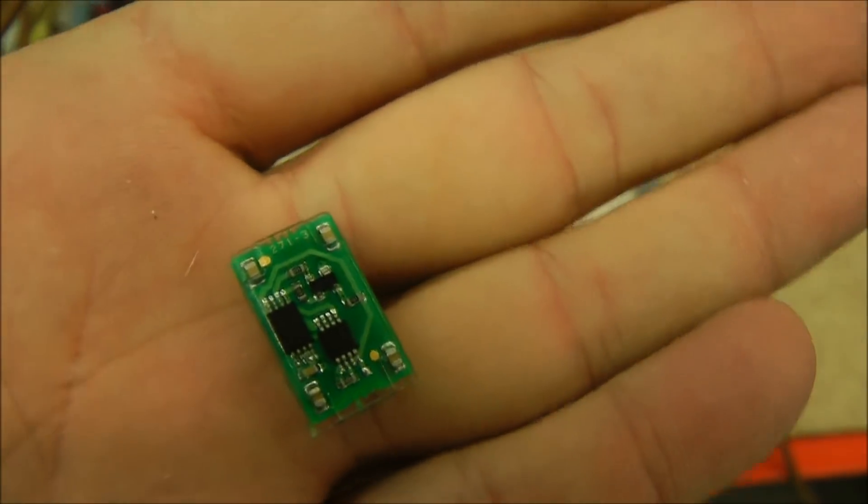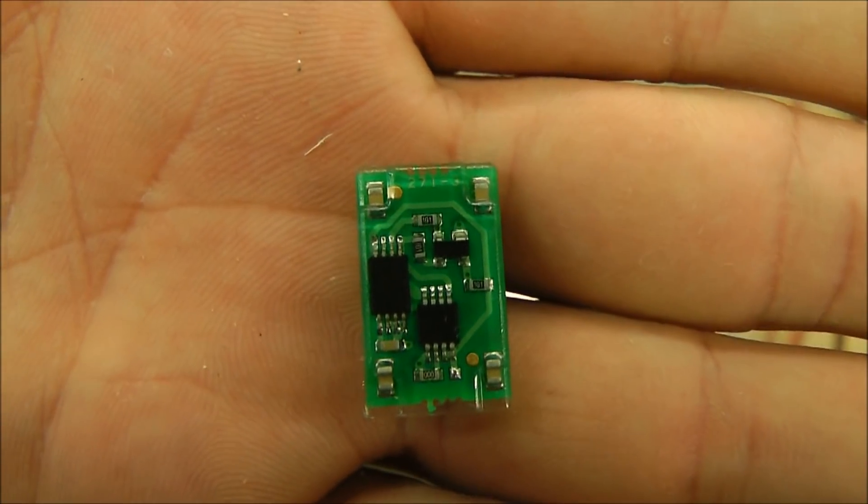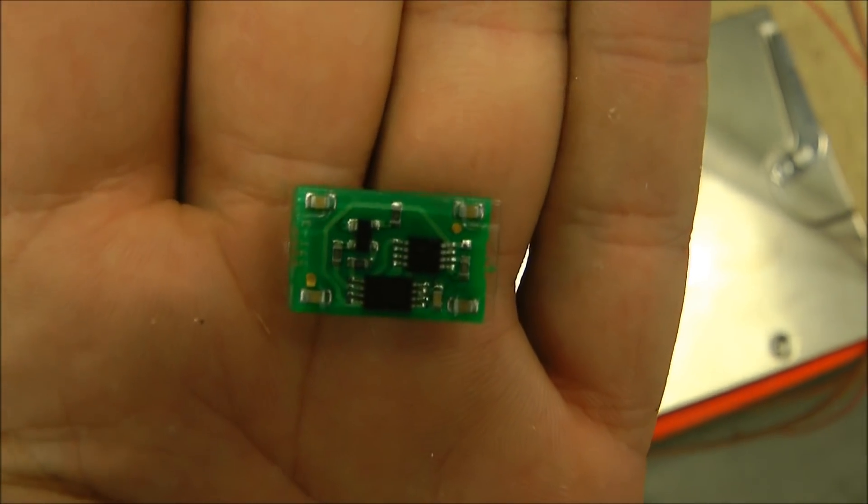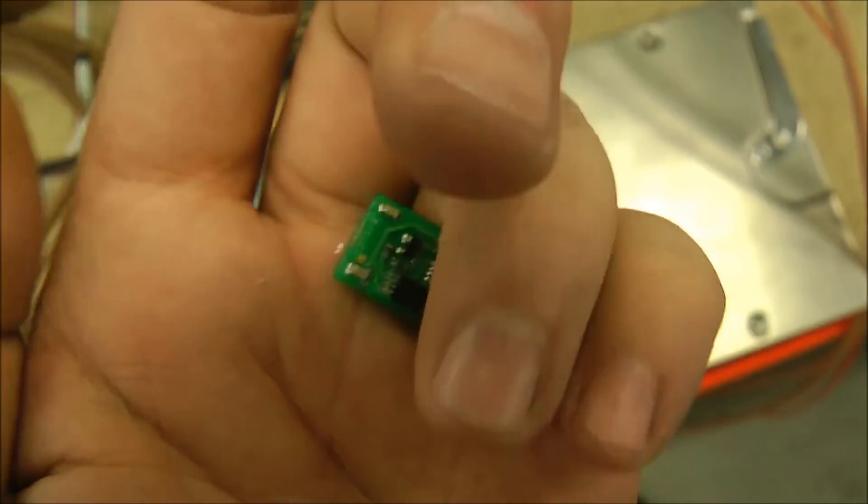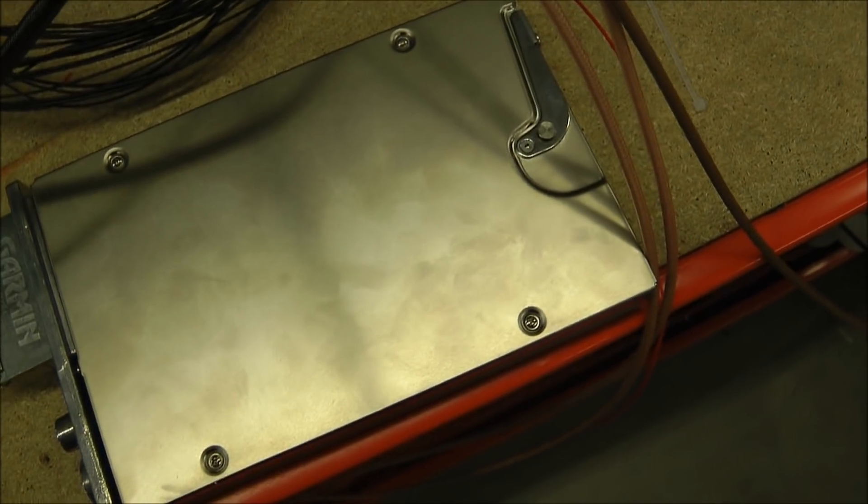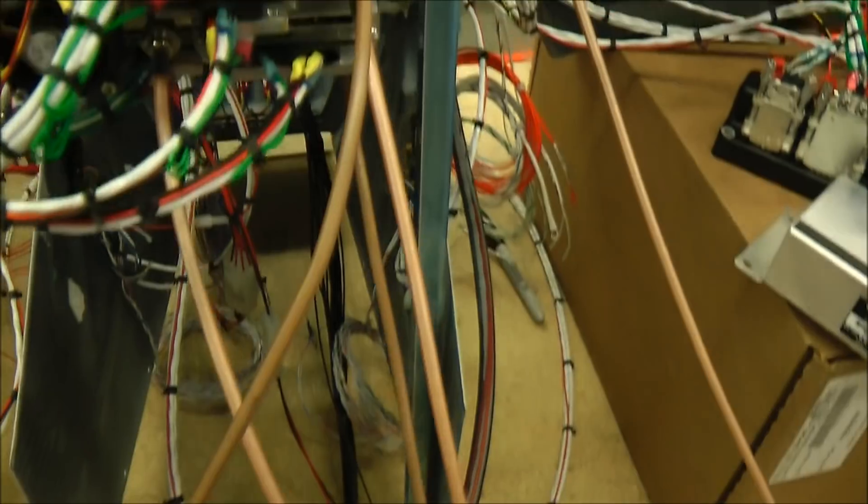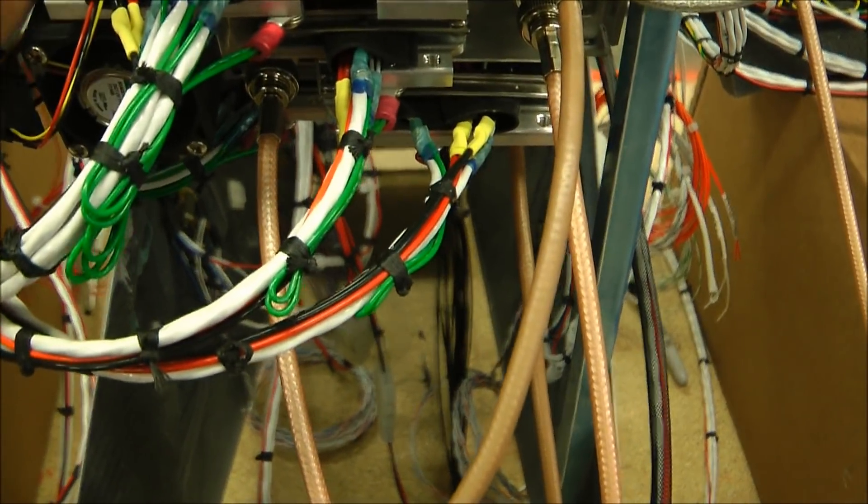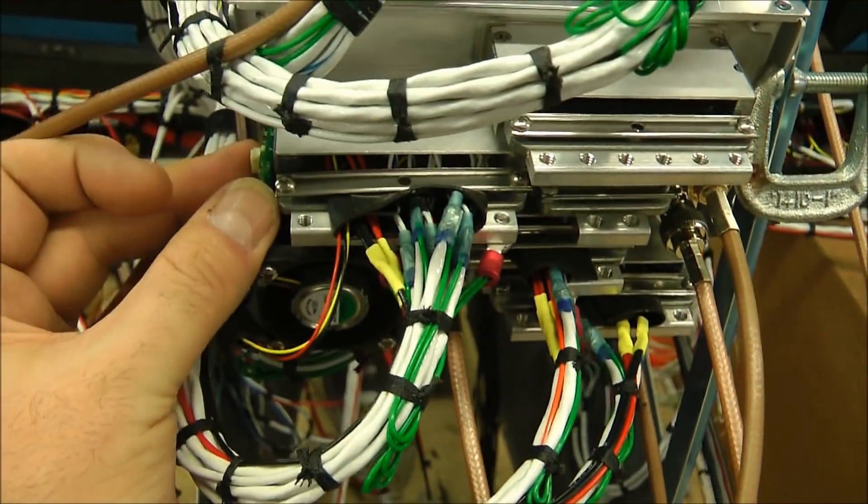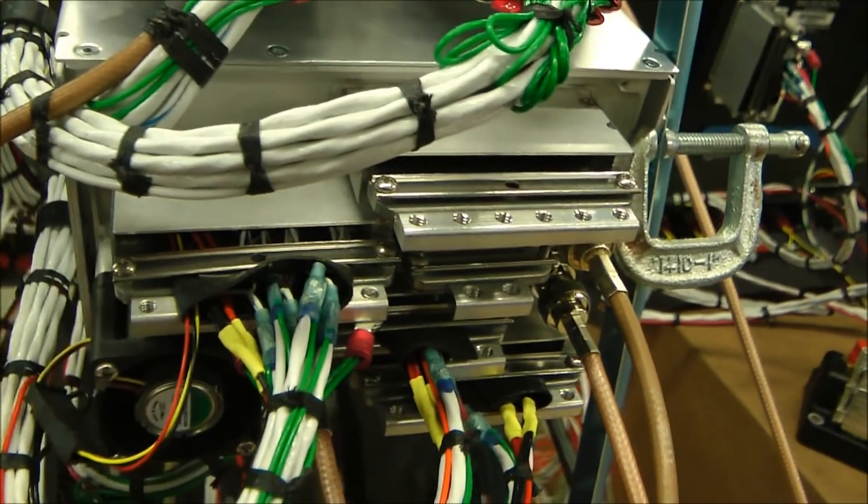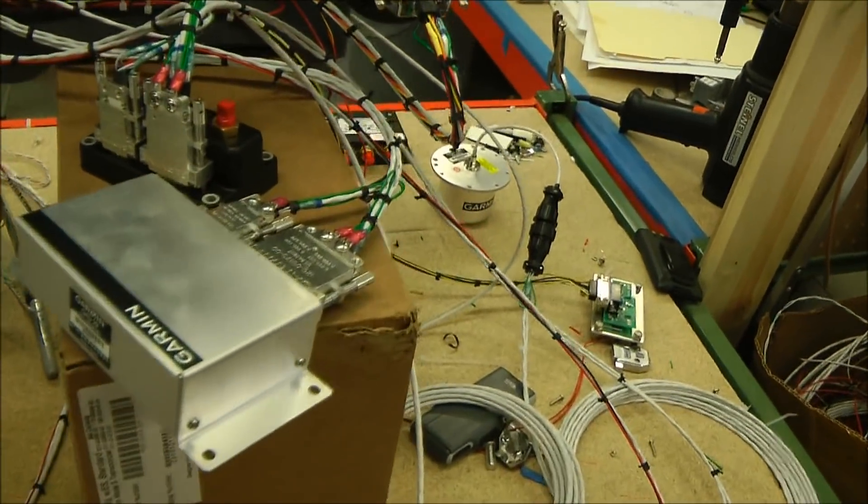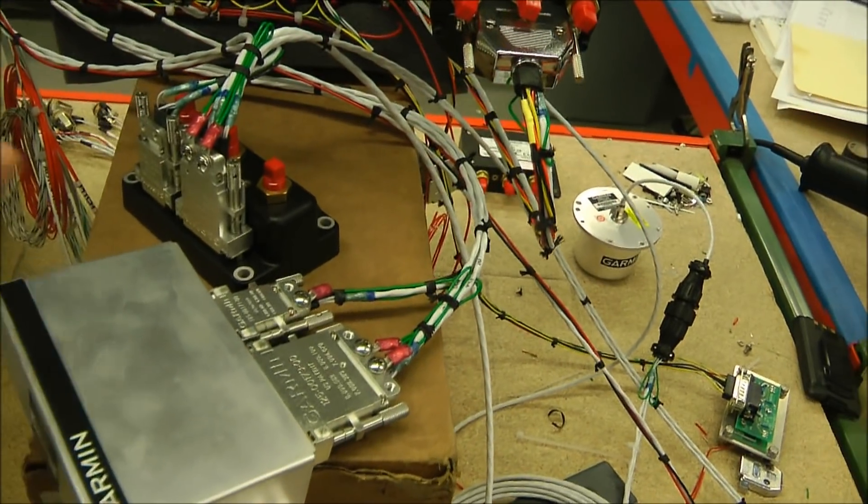Garmin is unique in the fact that they have built into the back of their back shells for their certified units this little chip. That's called a configuration module. It hides in the back shell and it stores configuration information for the system that you have in there. So if you go to replace something like a screen in your EFIS system, for example, it stores all your configuration data in there. Same thing with the certified GTN 650. Here's a back of a GTN 750. The configuration module is hiding down inside this back shell.